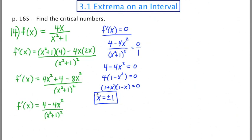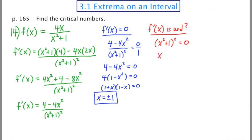The list could get bigger depending on where the first derivative is undefined. Looking at the denominator, we set (x² + 1)² = 0. Square rooting both sides gives x² + 1 = 0, so x² = -1. There's no real number that when squared gives -1, so there's no place where the derivative is undefined. Therefore, our only critical numbers are x = ±1.